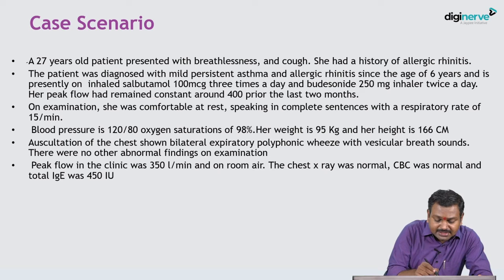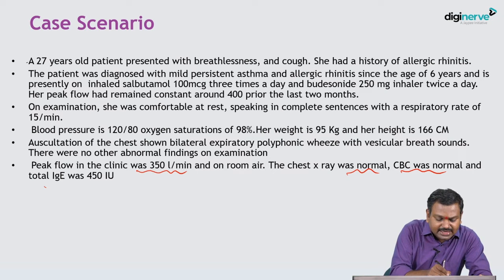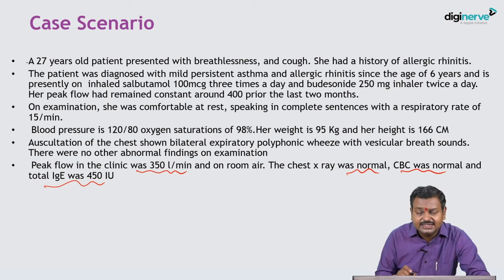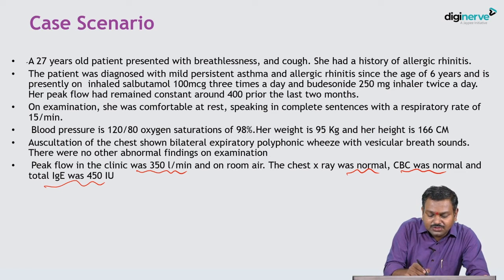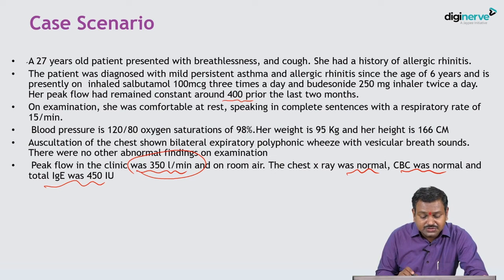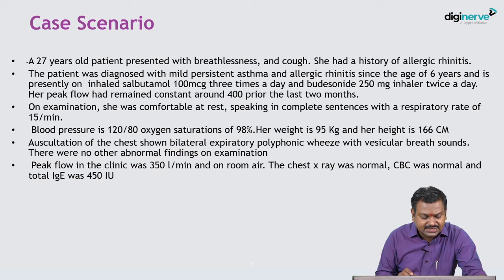When you check the peak flow meter in the clinic, it is found to be 350 ml. The chest X-ray is normal. The complete blood count is normal. The IgE is elevated — normal IgE is around less than 100 (around 85), but here it is 450, so IgE levels are elevated. The peak flow which was maintained around 400 has now dropped to 350 — almost a 15% drop — indicating persistent obstruction. The elevated IgE suggests an allergic element.